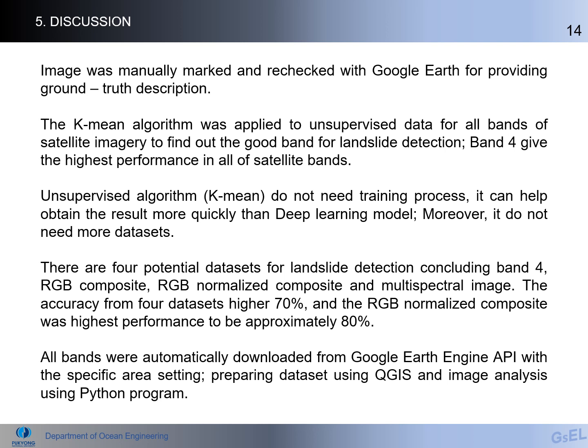The unsupervised K-means algorithm does not need a training process, which helps obtain results more quickly than deep learning models. Moreover, it does not require large datasets. The potential datasets for landslide detection include band 4, RGB composite, RGB normalized composite, and multispectral imagery. The accuracy for band 4 is higher than 70%, and the RGB normalized composite achieves approximately 80% performance.